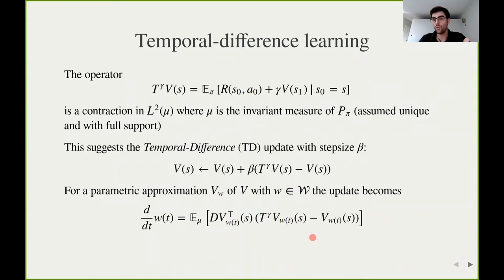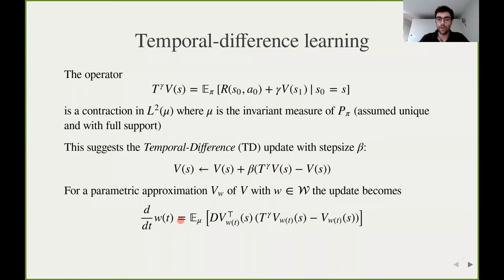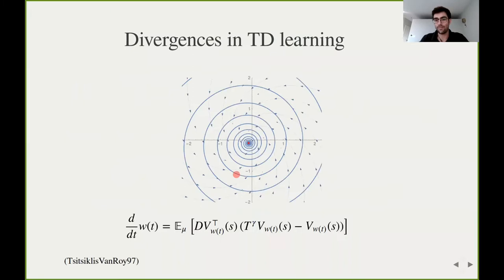This projection corresponds to having infinitesimally small updates of the algorithm, and we assume that the expectation can be performed exactly. This update is reminiscent of gradient descent, except that instead of using the actual value function v-star we have a proxy given by the Bellman operator. This fact results in an algorithm that is not a gradient algorithm, and therefore can interact poorly with a choice of nonlinear function approximation, as the following example shows.